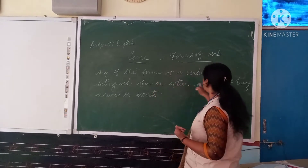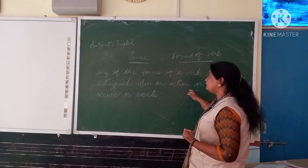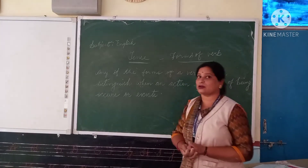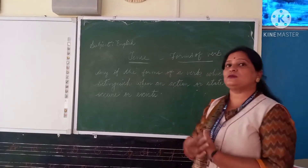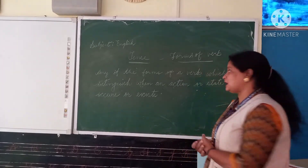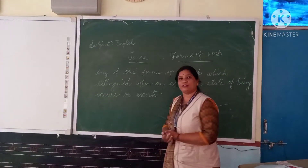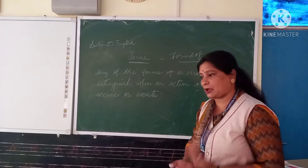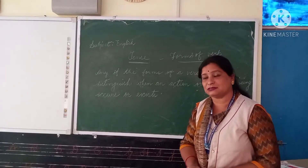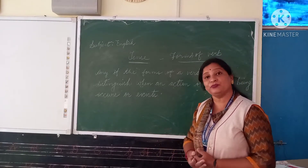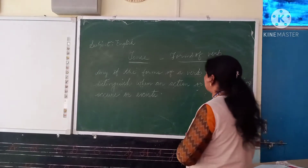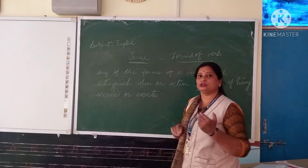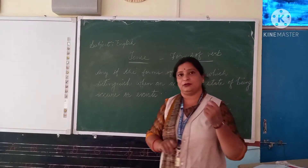So what does tense mean? Tense means forms of verb. Any of the forms of a verb will distinguish when an action or state of being occurs or exists. Verb forms tell us about the time of an action — whether it happens in the past, in the present, or it will happen in the future. We use these verb forms according to the tense.